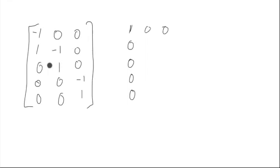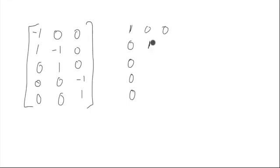We'd have zero, negative one, zero — or we could take zero, one, zero. If we multiply this by negative one, we can use this to clear off anything underneath this one, so we're just going to have zeros there.